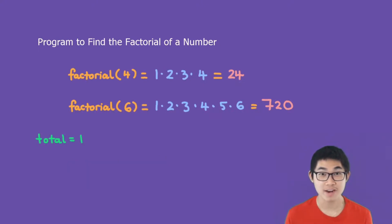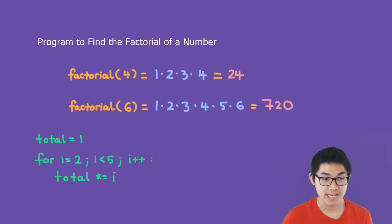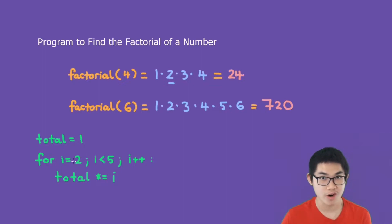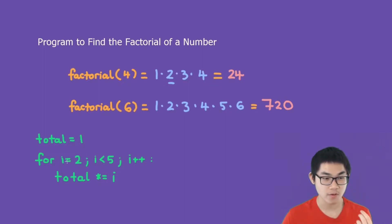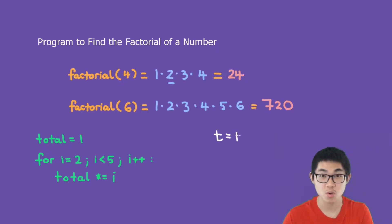Now how to write a program to calculate the factorial? The first step is to have a total variable which we set to 1. The next step is to use a for loop. So let's say we want to calculate the factorial of 4 — we'll start with the total of 1, written as t=1.